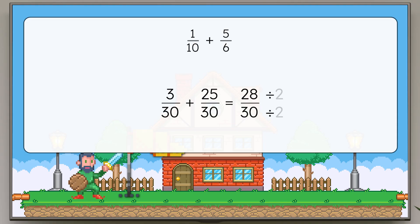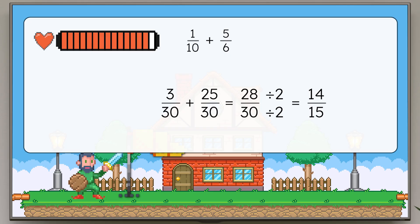Yes. Twenty-eight and thirty are both even and divisible by two. Twenty-eight divided by two is fourteen, and thirty divided by two is fifteen. I now have fourteen-fifteenths of my health bar restored. Nearly full health. Checkpoint complete!